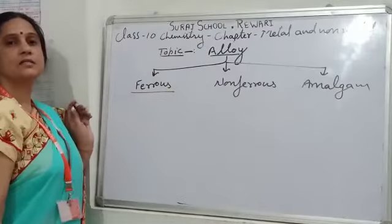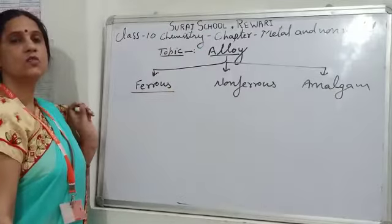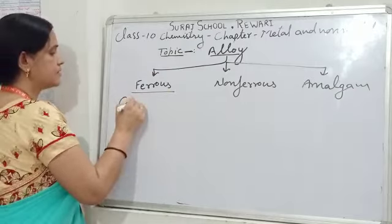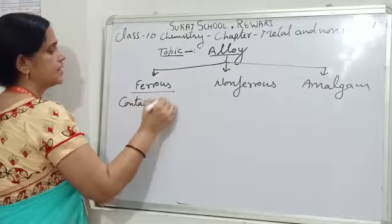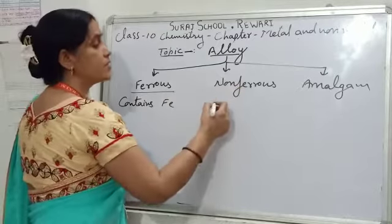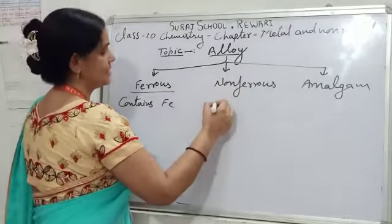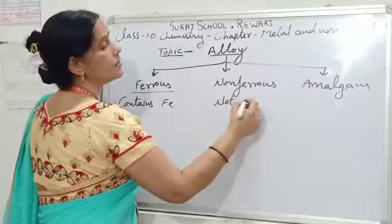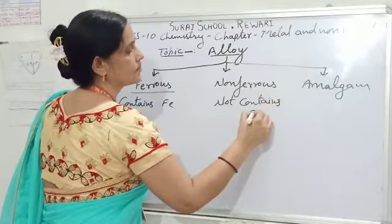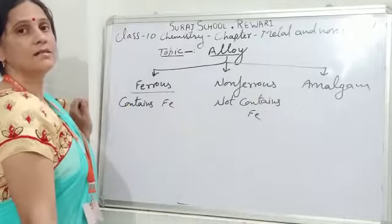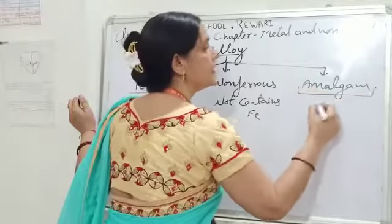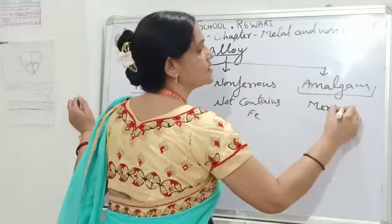Ferrous alloys are the alloys which contain iron as a constituent. Non-ferrous alloys are those which do not contain iron as a constituent. And amalgam are the alloys which have mercury as a constituent.